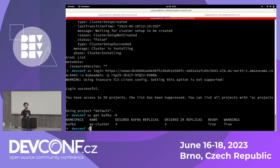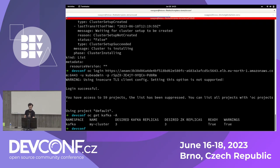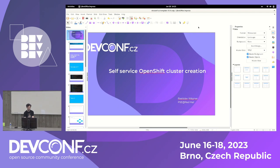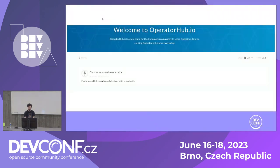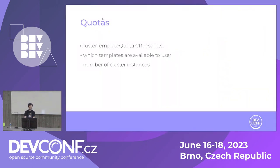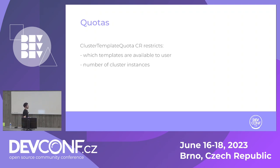But that's not all — there's one important part missing. When users get access to Cluster Template Instance CRs, they can create an infinite number of clusters, which is going to cost a lot of money, so you still want to restrict them. We have another custom resource called Cluster Template Quota, very similar to Kubernetes quotas but focused on the cluster templates use case. In this quota resource you can restrict which templates the user can create — which templates they can reference in the Cluster Template Instance — and also how many instances they can create.